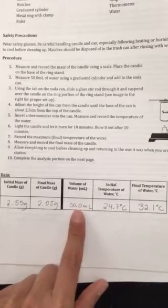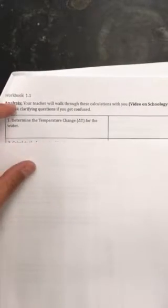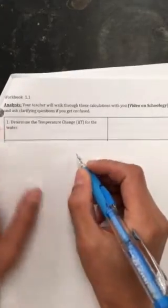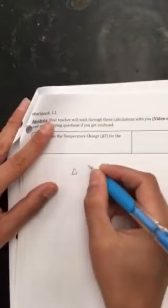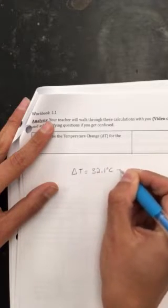So when you go to the next page it asks you to determine the temperature change of the water. So all you need to do is look at the final temperature of the water which is 32.1, so ΔT equals 32.1°C minus the initial temperature of the water which is 24.7°C.